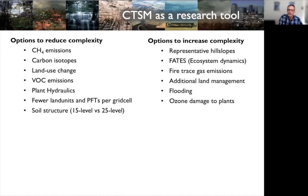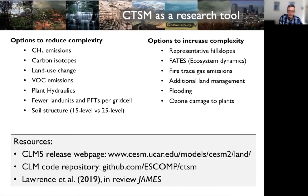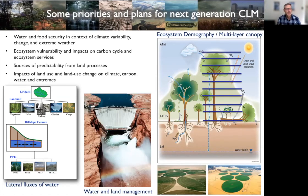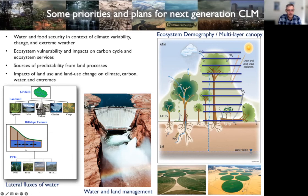Key priorities and plans for the next generation CLM focus on: water and food security in the context of climate variability and change, extreme weather, ecosystem vulnerability and impacts on the carbon cycle, ecosystem services, sources of predictability from land processes, and impacts of land use and land use change on climate, carbon, water, and extremes. Development work includes introducing the hill slope model, water and land management reservoirs, ecosystem demography with FATES, and a multi-layer canopy for more accurate surface flux representation.